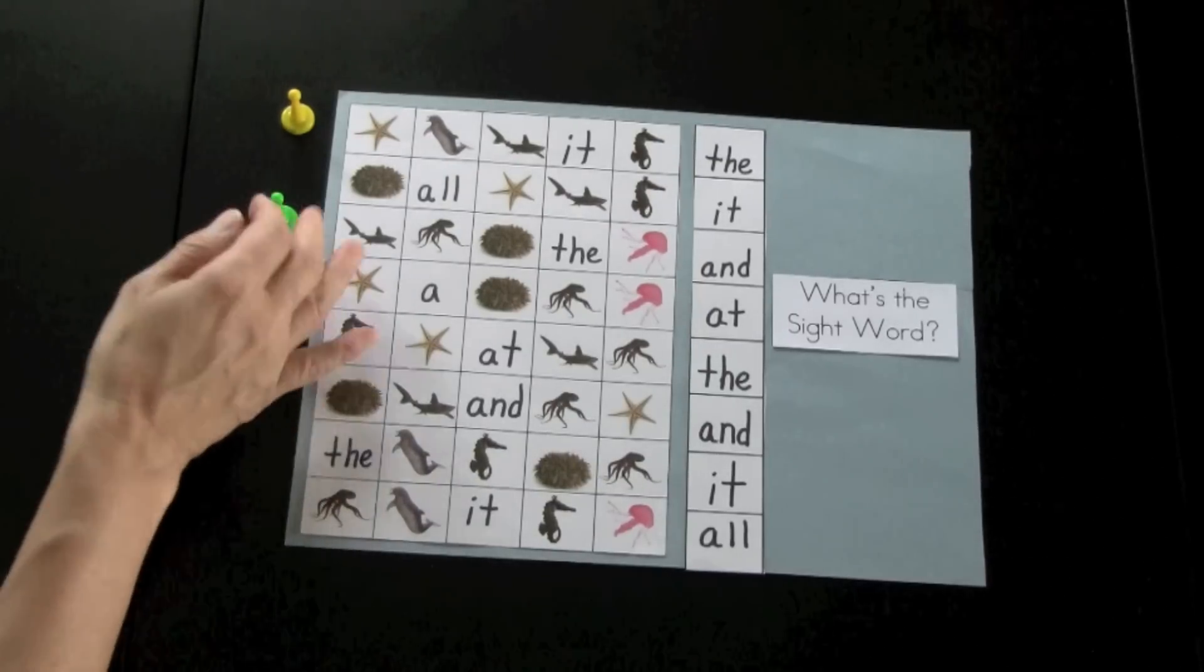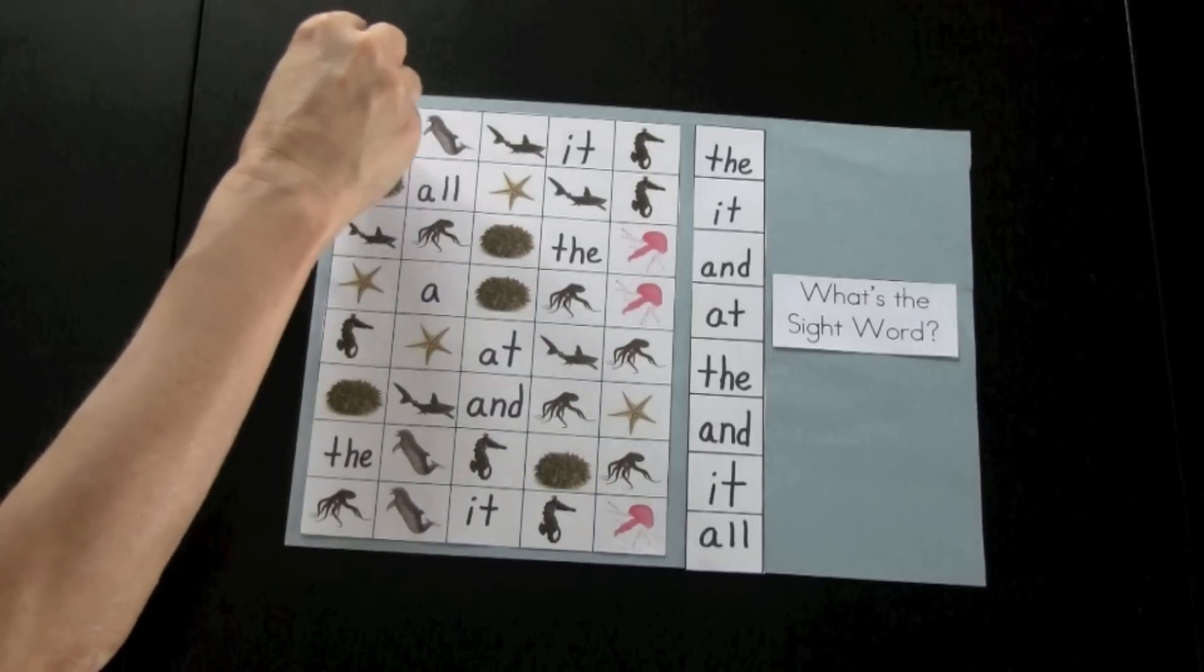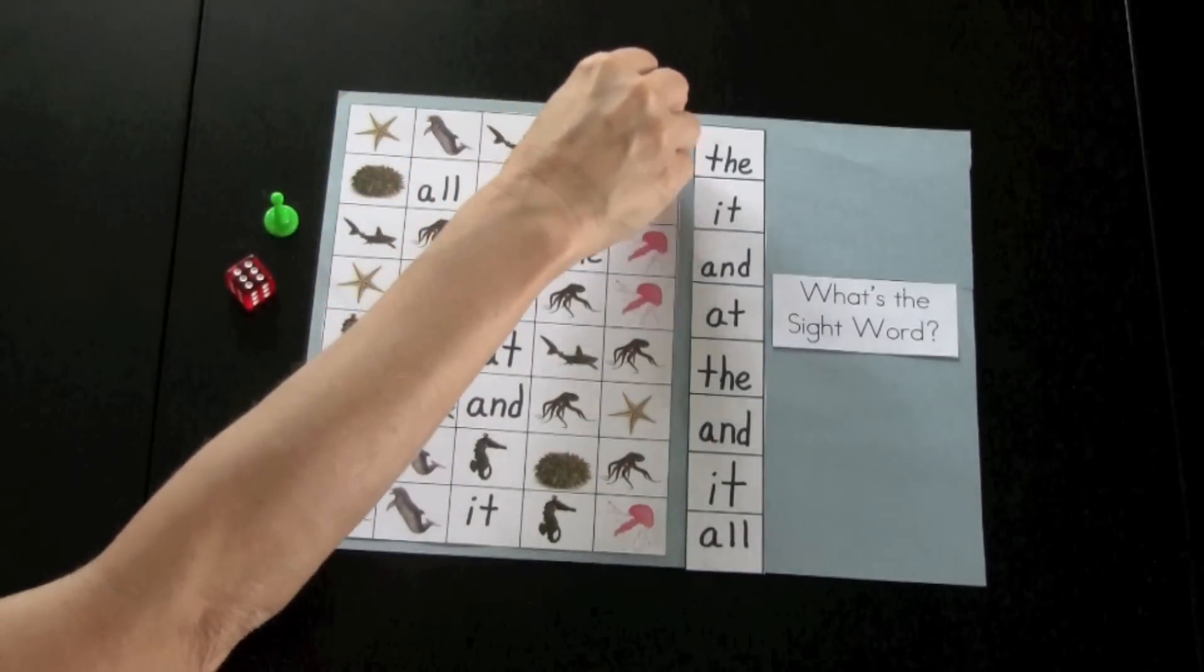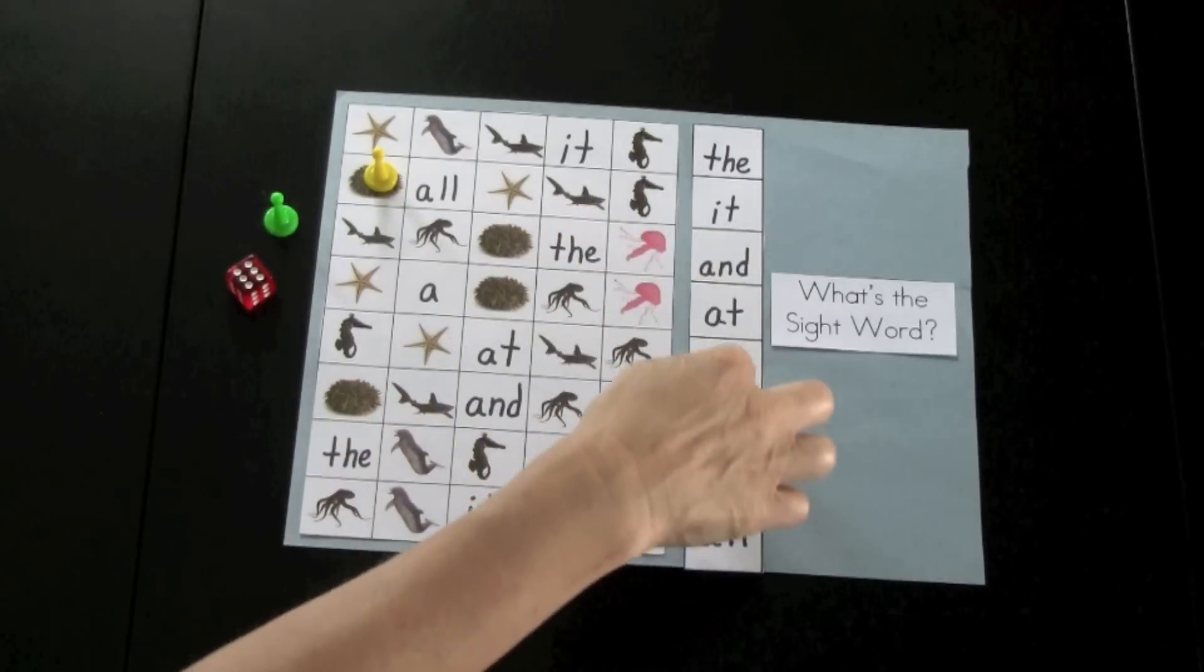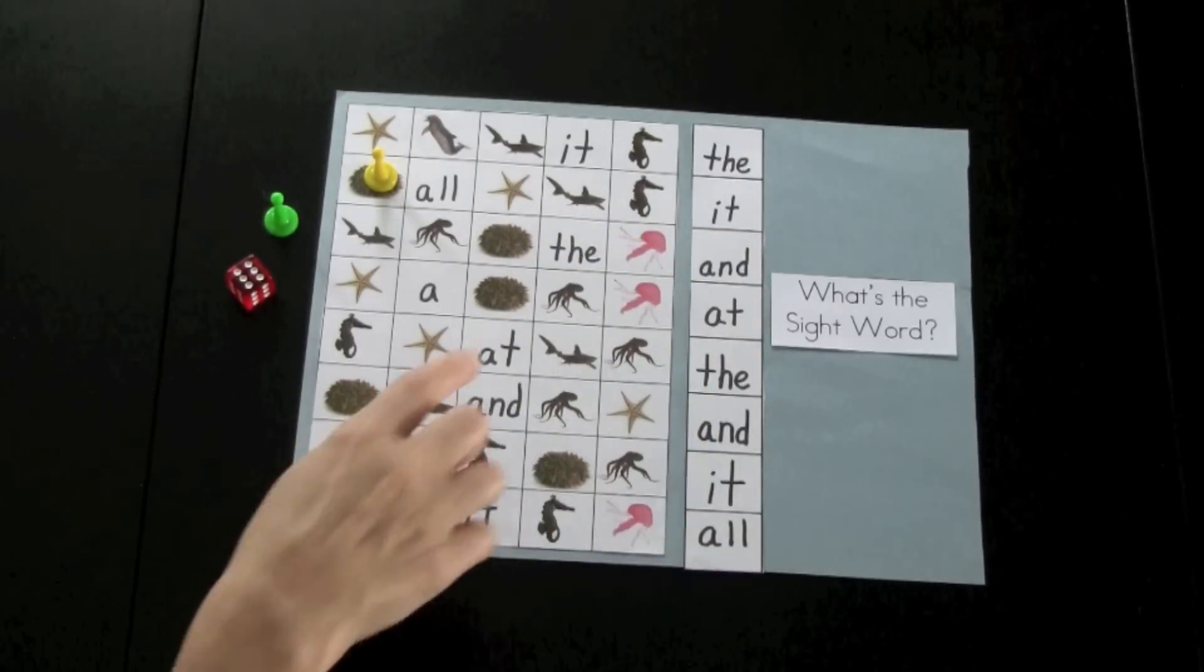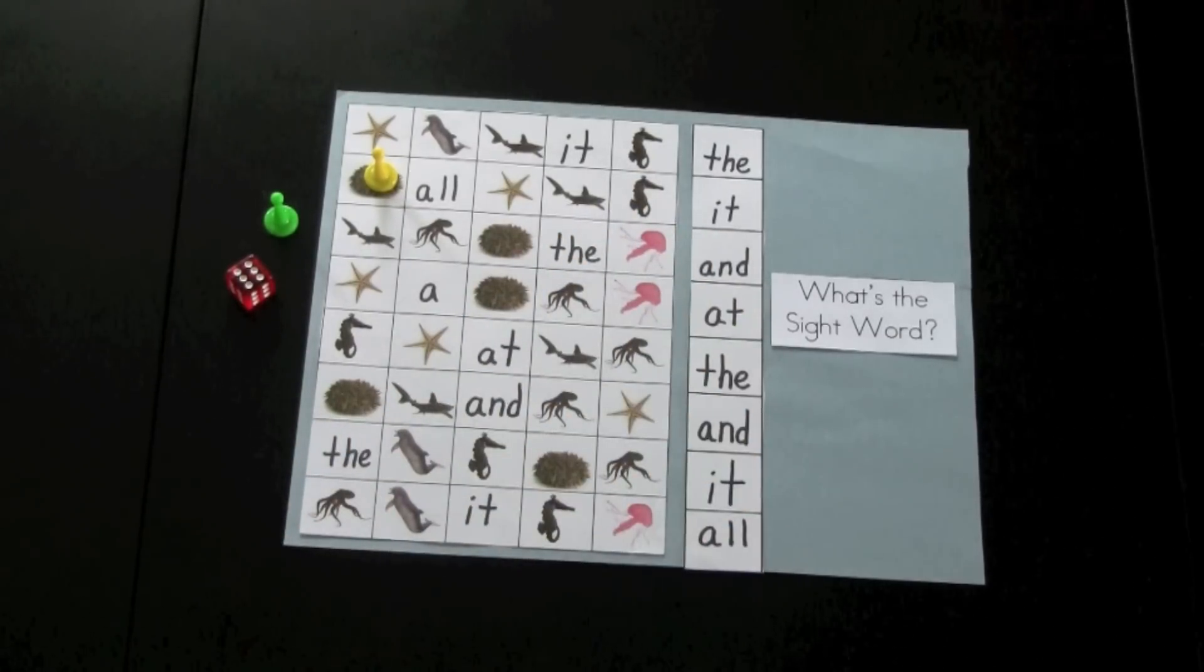Player one shakes a die. They have rolled six, so they will move six spaces: one, two, three, four, five, six. They have not landed on a sight word, so they cannot mark this off on their game board chart. The first person to have their game board chart marked off would be the winner.